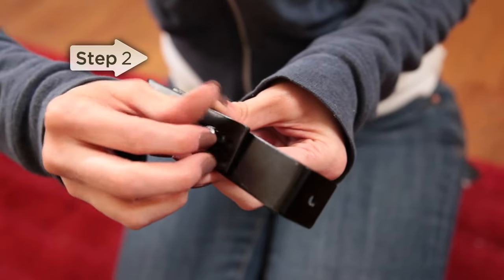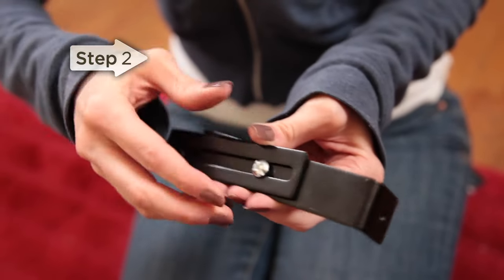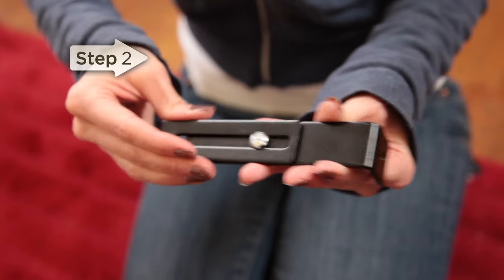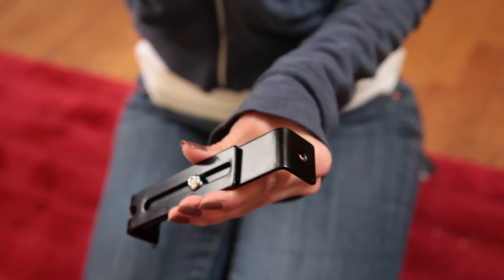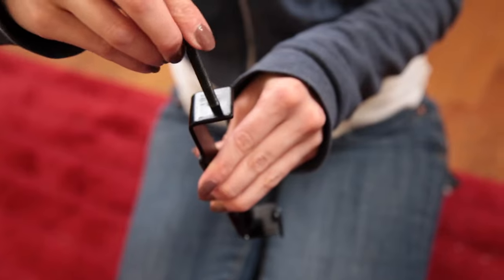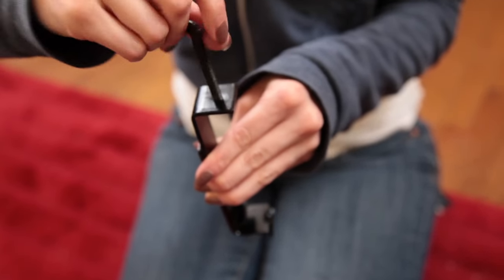Attach the key bracket to the lintel clamp with the 1/4-20 by 1/4-inch machine screw, but do not tighten. Then, thread the 1/4-20 by 2-inch thumb screw into the lintel clamp. Do not tighten the thumb screw.